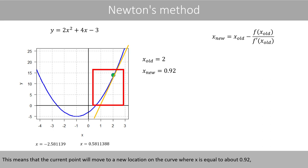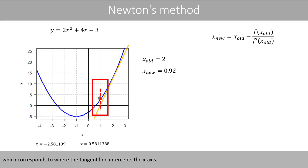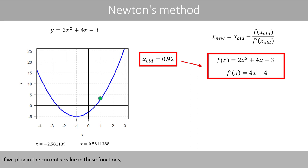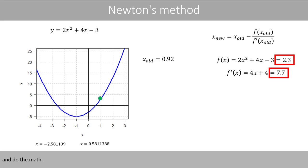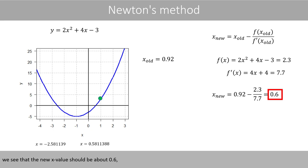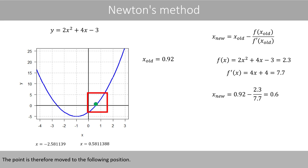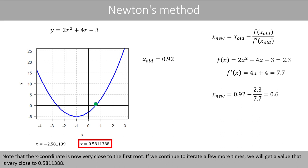This means that the current point will move to a new location on the curve where x is equal to about 0.92, which corresponds to where the tangent line intercepts the x-axis. Our current x-position is now 0.92. We now update the x-position with the same math as before. If we plug in the current x-value in these functions and do the math, we see that the new x-value should be about 0.6, which corresponds to where the current tangent line intercepts the x-axis. The point is therefore moved to the following position. Note that the x-coordinate is now very close to the first root. If we continue to iterate a few more times, we'll get a value very close to 0.5811388.